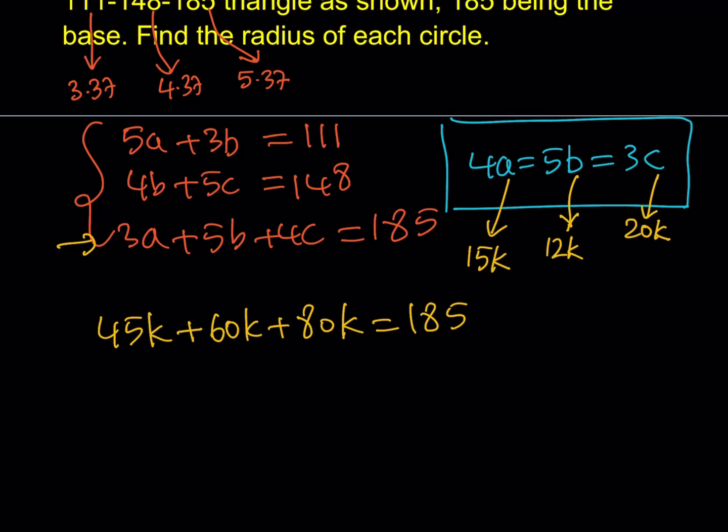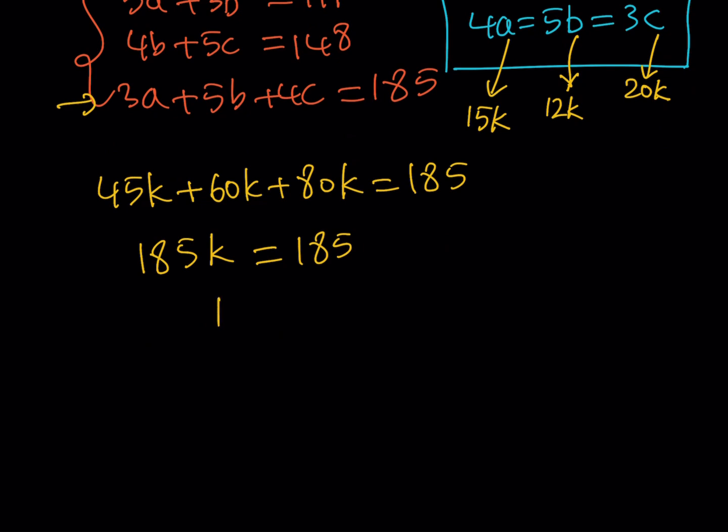Now, you're going to realize why I picked these large numbers, because the answers are going to be a little nicer that way. So, when you add these up, you're going to get 185K equals 185. And, then, from here, we get K equals 1. Awesome. This is why I picked these numbers. Hopefully, that's more clear now.